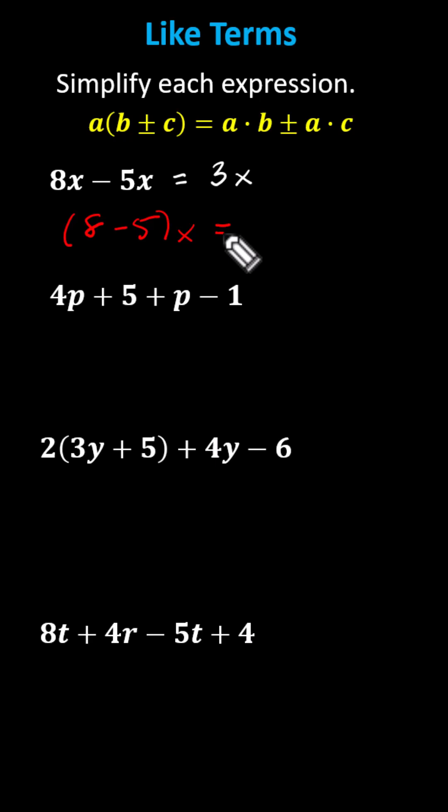But simplifying inside the parentheses, we have 8 minus 5 is 3, and 3 times x is 3x. So this is really what's happening. Normally, we simply add and subtract the coefficients to combine like terms.